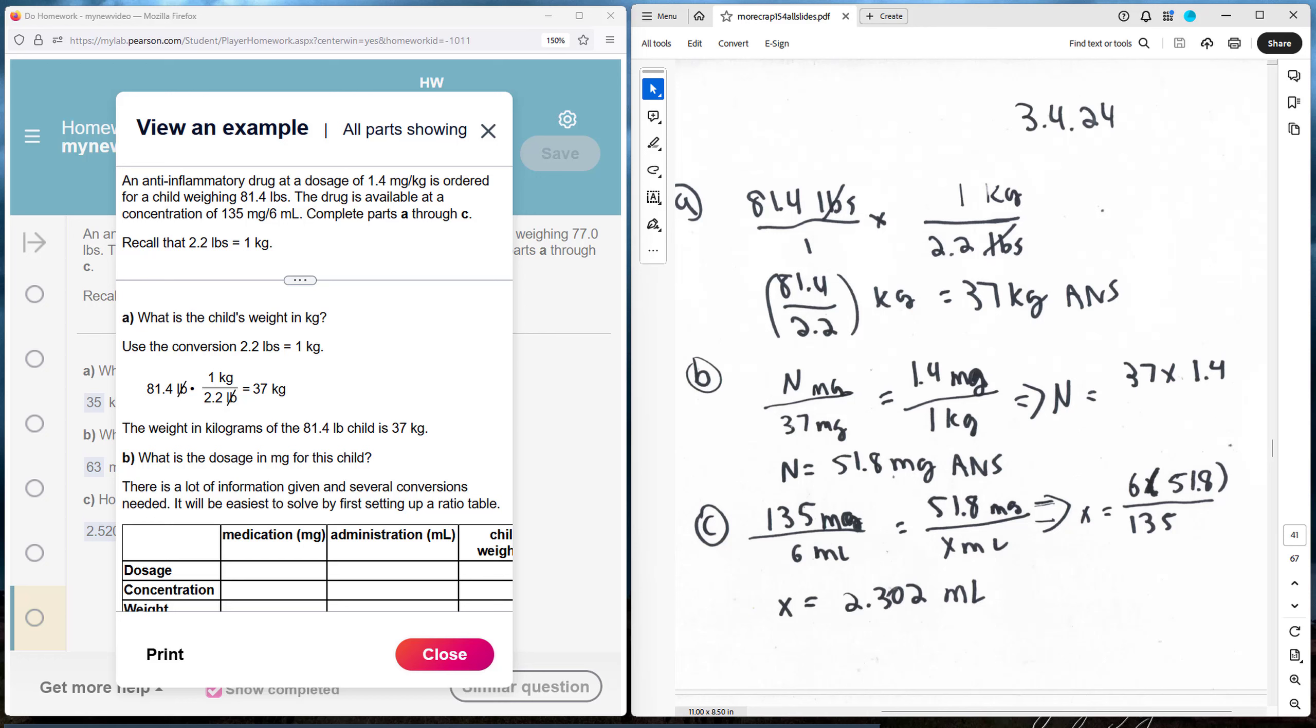An anti-inflammatory drug at a dosage of 1.4 mg per kg of weight is ordered for a child that weighs 81.4 pounds. The drug is available at a concentration of 135 mg per 6 mL. Complete Parts A through C.